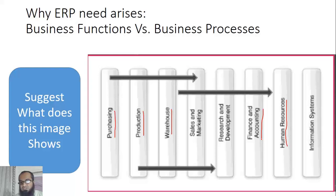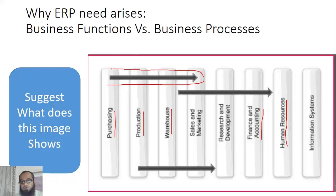For example, at my university, if I need a new laptop, the purchasing process is initiated by me — a faculty member, not someone in the purchasing department. Then it goes to the administration department for approval, then to the purchase department to manage the procurement, and finally to the accounts and finance people who eventually pay the vendor. So purchasing as a process cuts across many departments.